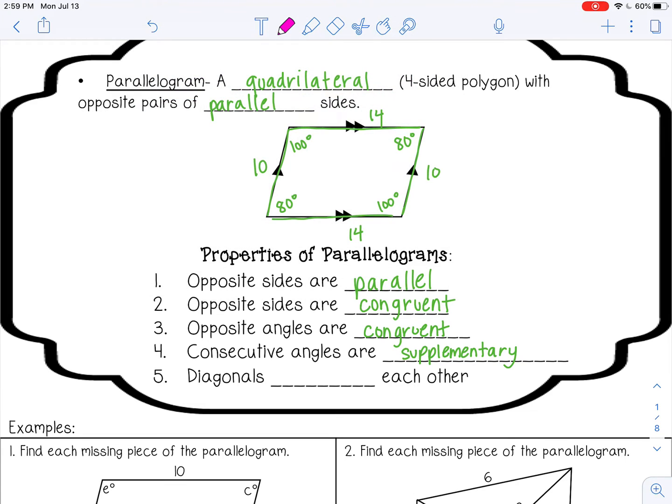So consecutive angles would be like these, or like these, or like these. And as you can see, those add to 180—100 plus 80 is 180. All of those are consecutive pairs.